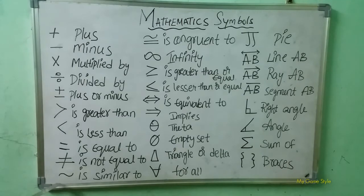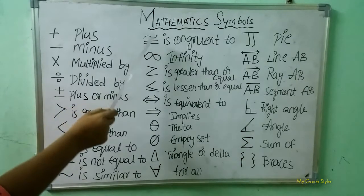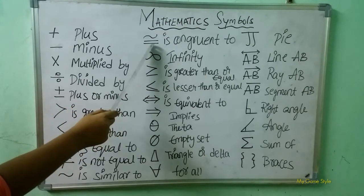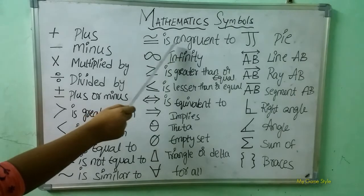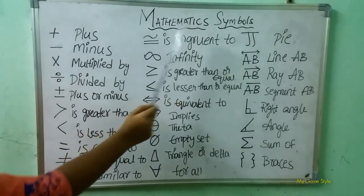And next, what is this symbol? This is a is similar to symbol. And next, here this symbol — what is this symbol? This is a congruent to symbol.